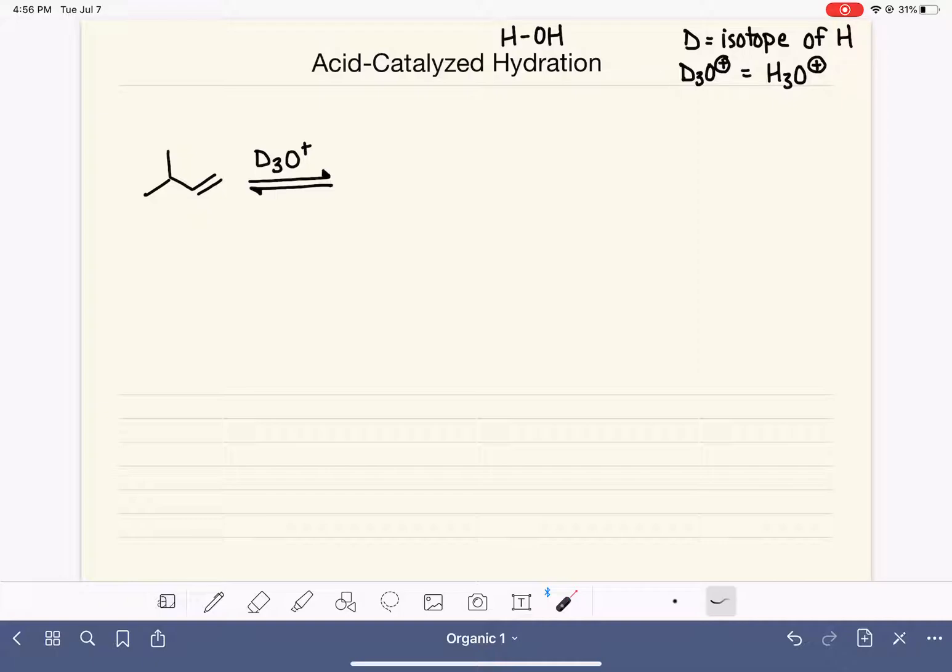So for this reaction, we're using D3O+ as the acid catalyst and also as the reagent. In order for me to draw this mechanism, I want to redraw the D3O+ in its Lewis structure. It makes it a little bit easier to work with for the mechanism.